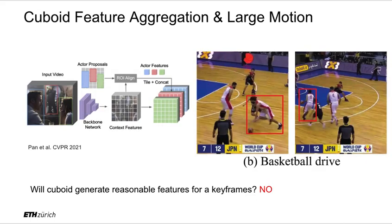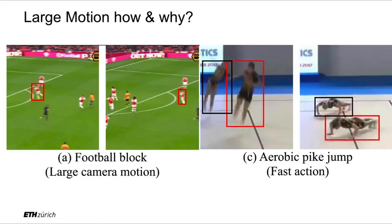However, such a cuboid would fail to accumulate meaningful features when there is large motion present, because the spatial location of an actor changes drastically over time, which the cuboid would fail to cover. Large motion in an actor's spatial position can occur due to large camera motion or due to a fast action.